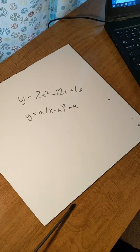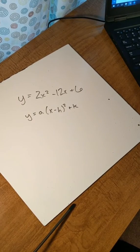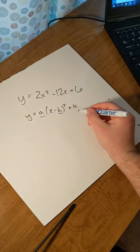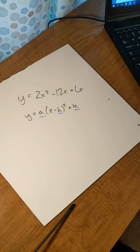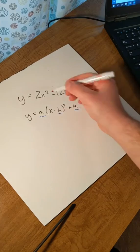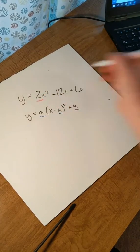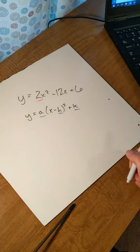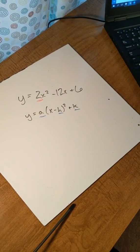Standard form is y equals a times x minus h squared plus k. In order to get that information, we're going to have to find a, h, and k. Then we can find a whole bunch of other information based off of that. The first step is to look at the variable in front of the x squared term and factor that out.